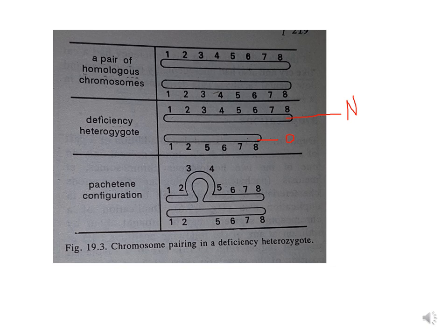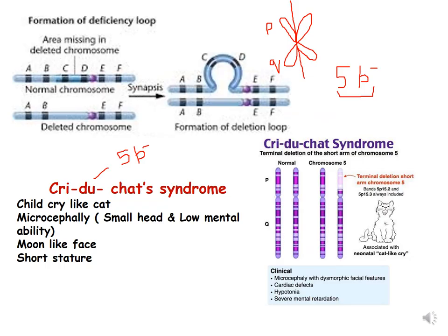This picture is from P.K. Gupta, which you can refer to for this topic. Another picture shows loop formation in the longer chromosome. As discussed, 5P- is Cri-du-chat syndrome. Children who suffer from Cri-du-chat syndrome cry like a cat, and they have microcephaly — a small head — and low mental ability.